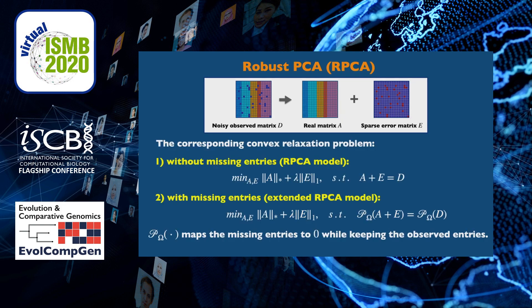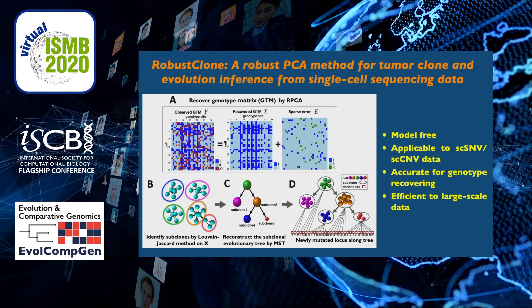The corresponding convex relaxation problem is to minimize the matrix nuclear norm and L1 norm. RPCA can also be extended naturally to model corrupted data in the presence of missing entries. Based on the standard RPCA model, RobustClone first decomposes the observed genotype matrix Y into the sum of the low-rank genotype matrix X and a sparse matrix E.